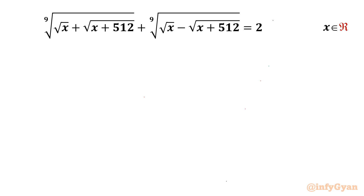Welcome back to Infigyan friends. Today in this video we are going to take up one very interesting radical equation challenge. The equation is: 9th root of (√x + √(x+512)) plus 9th root of (√x − √(x+512)) equals 2. We have to find out the real solutions.